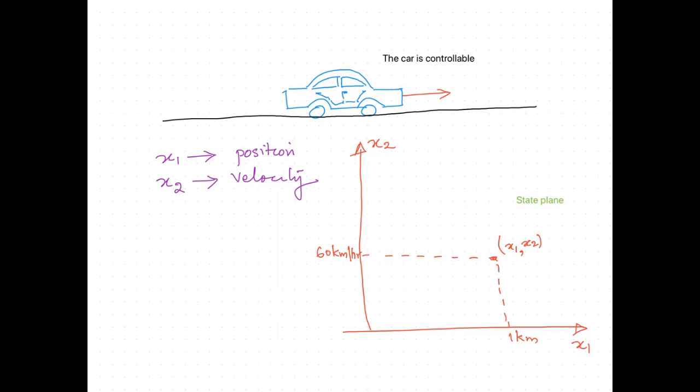Here comes the importance of the term reachability: not only can each state variable be achieved individually, each combination of the variables can also be achieved. For example, we could accelerate the car such that it reaches a position of 1 km and has a speed of 60 km/h. It doesn't mean the car should remain there — it is physically impossible to maintain that state as the car is moving. Thus controllability requires that the system should be able to reach a state but not necessarily maintain it.